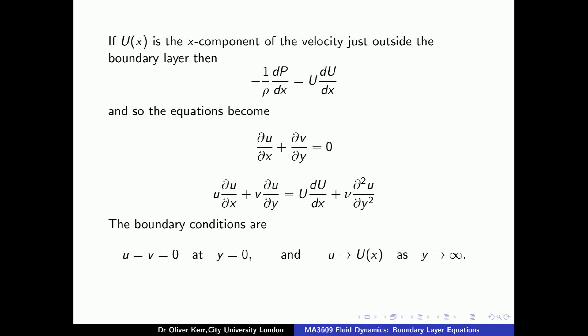To complete the problem, we have to have boundary conditions. At the wall, we will have the no-slip condition, so u and v are both zero. Away from the wall, the boundary layer flow will have to match up to the exterior flow, so we require that the u component of the velocity in the boundary layer will tend to the u component of the velocity in the exterior flow as we move from the wall. Mathematically, we will require that little u will tend to big U as y tends to infinity.